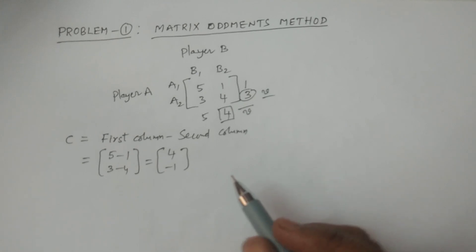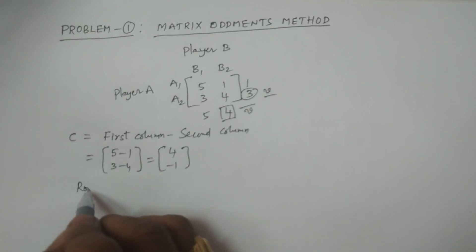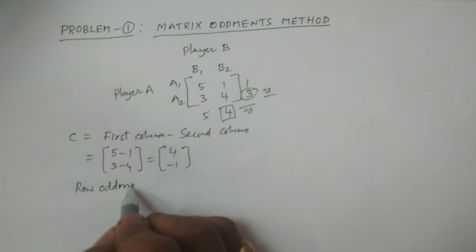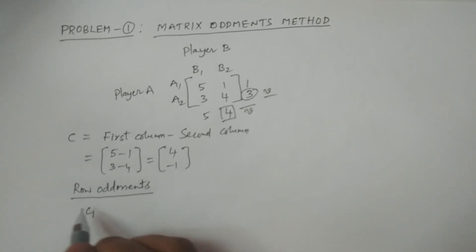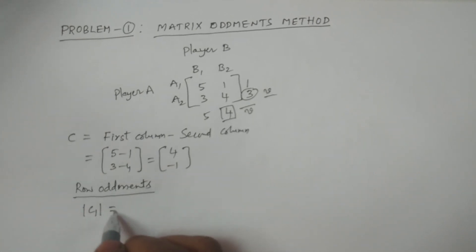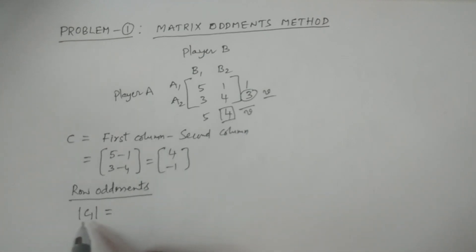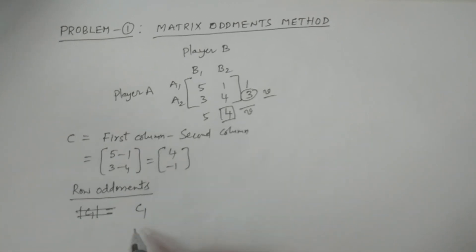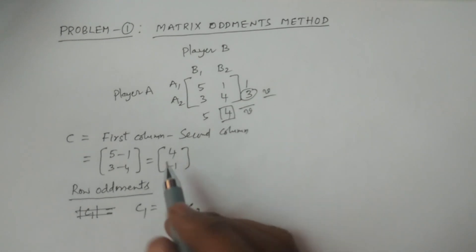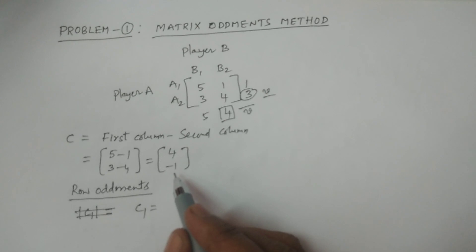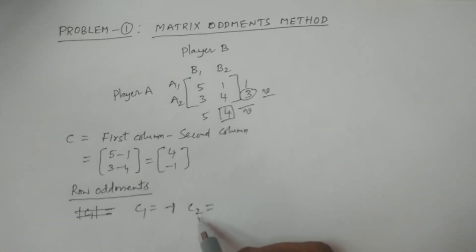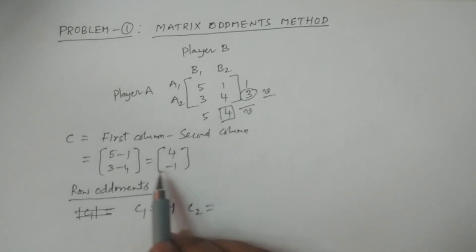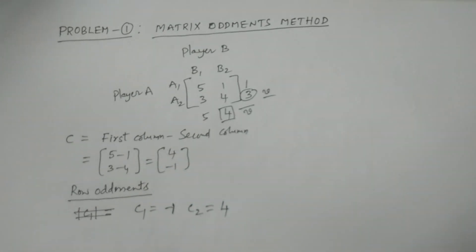Now we find row oddments. The determinant of C1: C1 is formed by taking the first row as a single element. Determinant of C1 equals -1. For C2, the second row remaining element gives determinant of C2 equal to 4. So C1 = -1 and C2 = 4 — these are the row oddments values.